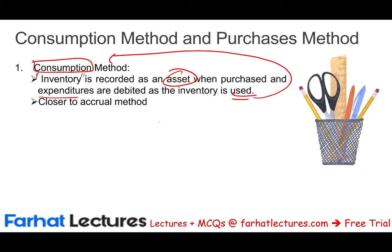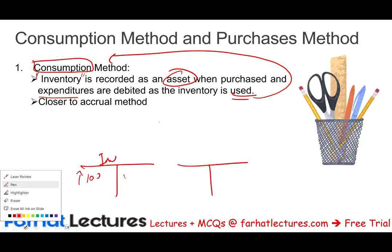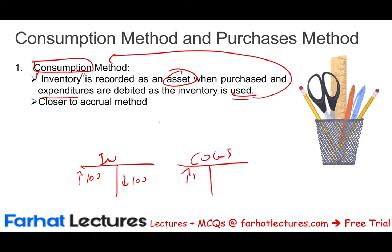The consumption method is closer to the accrual method. For example, with regular inventory for a business: when we buy $100 worth of inventory, it's recorded as inventory. When we sell it, we reduce inventory and increase cost of goods sold — that's when we expense it. Same concept applies under the consumption method.